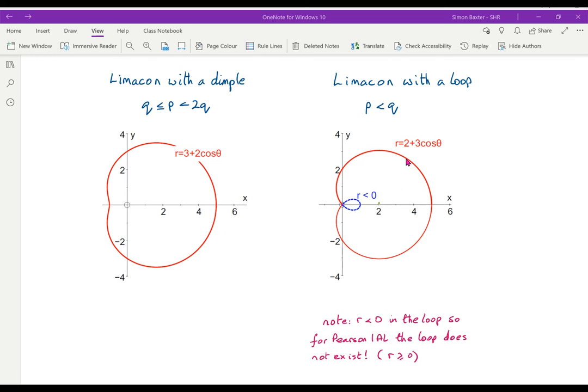As we go round, we'll get to a point here, where cos theta is minus 2 thirds. Then r becomes negative, dotted blue. Then r becomes positive again, and out you go. Now your course, the Pearson IAL course, does not allow r to be negative. So in the A-level course that you are studying, this is a limousine which doesn't have a loop. The loop doesn't exist. I think that's a pity. I think the whole curve should be the limousine with a loop.